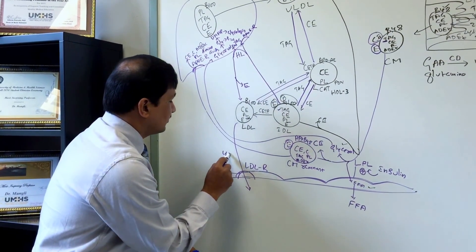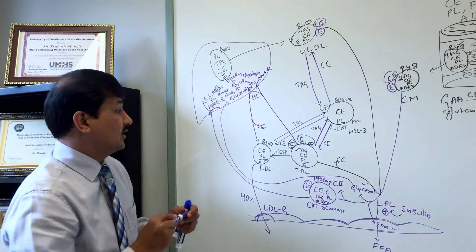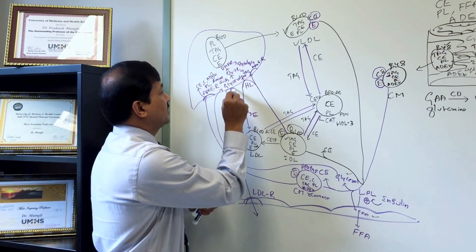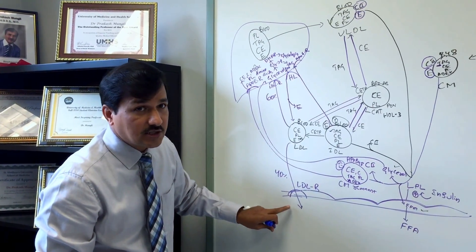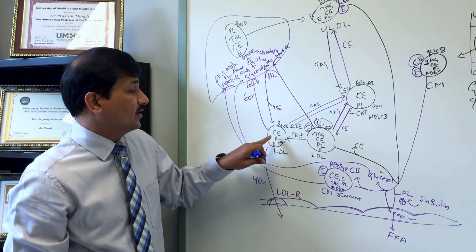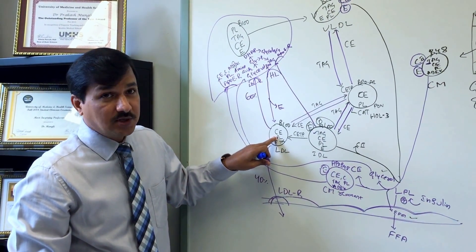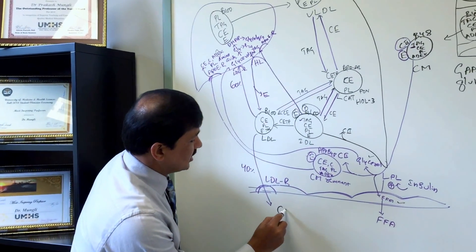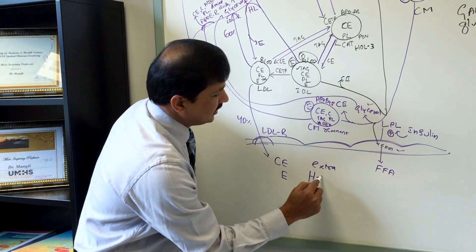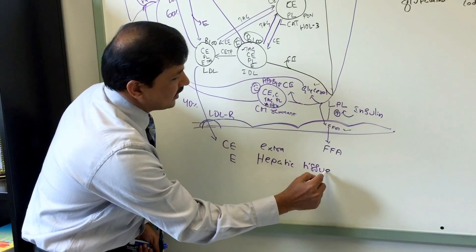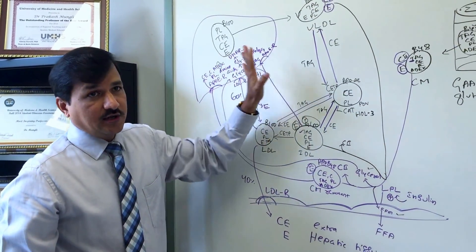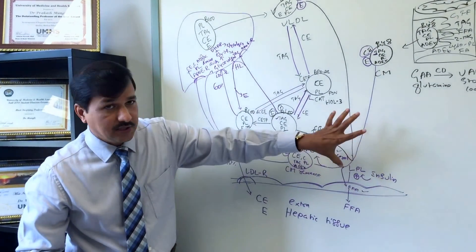Once LDL is formed and matured, 40% is taken up by extrahepatic tissues via the LDL receptor, which recognizes ApoB100. 60% of circulating LDL is taken up by the liver, again via LDL receptor. LDL carries cholesterol ester, vitamin E, some phospholipid, and very little triacylglycerol — and that is how cholesterol ester and vitamin E end up in extrahepatic peripheral tissues (40%) and the liver (60%), after which the liver recirculates it as VLDL converted back to LDL.